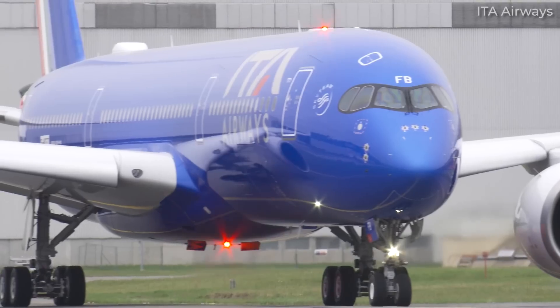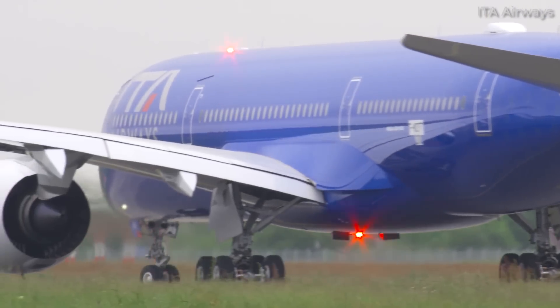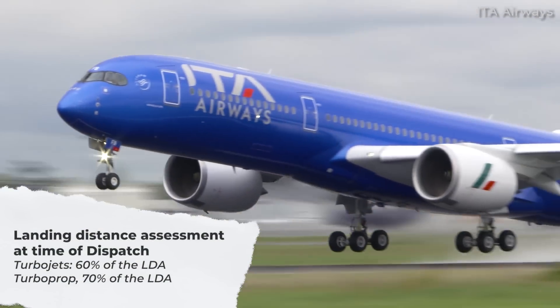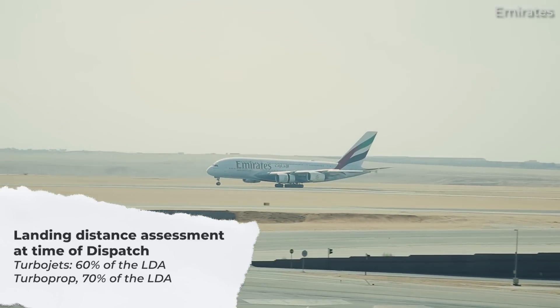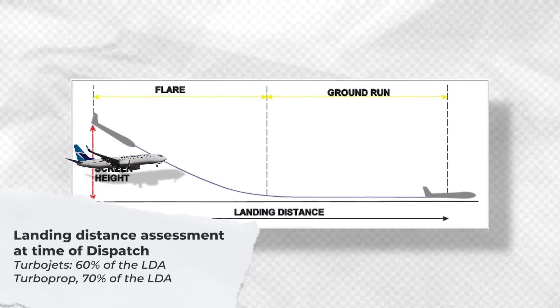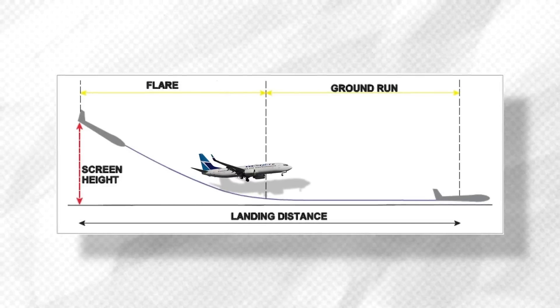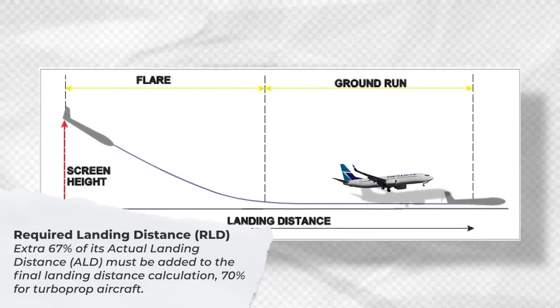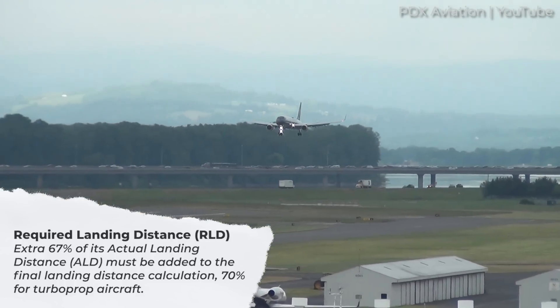When it comes to landing distance requirements, there are two conditions to consider. One is the calculation of landing distance when the aircraft is dispatched, and the second is done in flight right before the landing. According to regulations, when an aircraft is dispatched to an airport, it must be able to land within a certain percentage of the landing distance available at the field. For a turbojet aircraft, it must be possible to make the landing within 60% of the LDA, and for a turboprop, within 70% of the LDA. However, for turbojet aircraft, an extra 67% of its actual landing distance or ALD must be added to the final landing distance calculation, and 70% for turboprop aircraft. This multiplied aircraft ALD is known as the required landing distance or RLD.